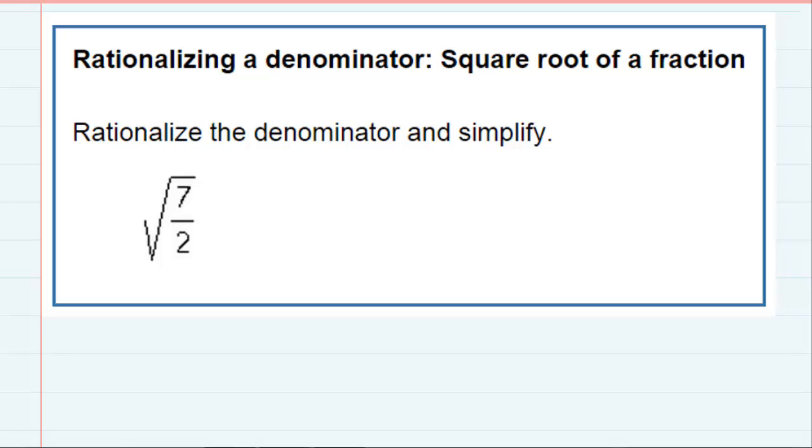We're rationalizing a denominator where we have a square root of a fraction. We're asked to rationalize and this radical is covering an entire fraction, both the numerator and the denominator. The first thing I'm going to do is rewrite this fraction and separate that radical into the square root of 7 on the top and the square root of 2 on the bottom.